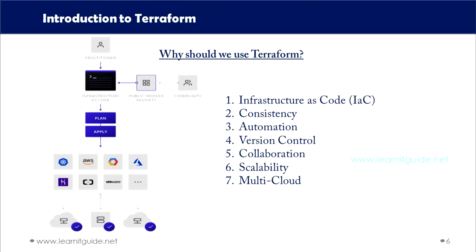The next benefit is consistency. Terraform ensures the same configuration defined in the Terraform files is applied across multiple environments like development, staging, and production. If you create one environment using IaC, you can replicate the same for multiple environments in a matter of seconds. Then automation — Terraform reduces human errors, syntax-related issues, and manual steps by automating all infrastructure provisioning.